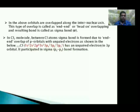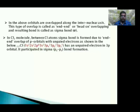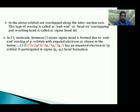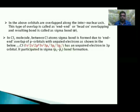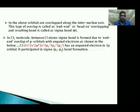In the chlorine molecule (Cl₂), a sigma bond is formed between two chlorine atoms due to end-to-end overlapping of p atomic orbitals. Chlorine has an electronic configuration in which an unpaired electron is present in the 3pz atomic orbital. This 3pz atomic orbital, having an unpaired electron in the valence shell, can participate in bond formation by the end-to-end overlapping pattern.